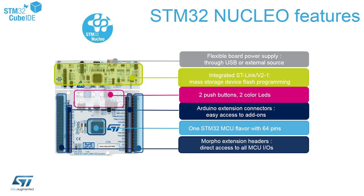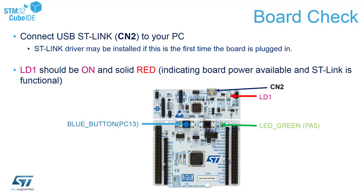Let's have a look at the components which you will use during this session. On top you can see the ST-Link programmer debugger. It can be connected to the PC using the CN2 connector with a micro USB cable. This is the main chip for the ST-Link. Below you can find the board for our microcontroller, with the microcontroller in the center.